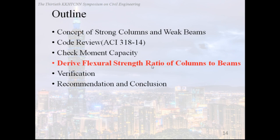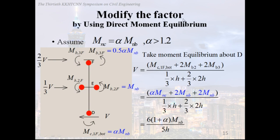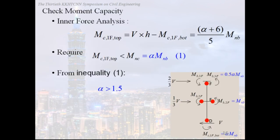Fourthly, we will derive flexural stress ratio of columns to beams. Modify the factor. In here, we carry out the same analysis, and we assume this equation to satisfy the code. And similarly, we also use the direct moment equilibrium to get the best shear V. And we require that the MC flexural forward at the top smaller than MNC. In this way, the failure mode of the structure will become beam mechanism. And from this inequality, we get the amplification alpha larger than 1.5 to satisfy this code.